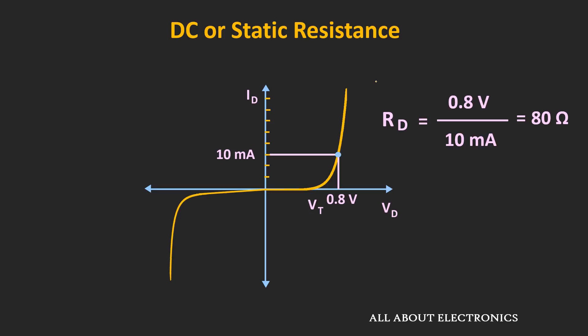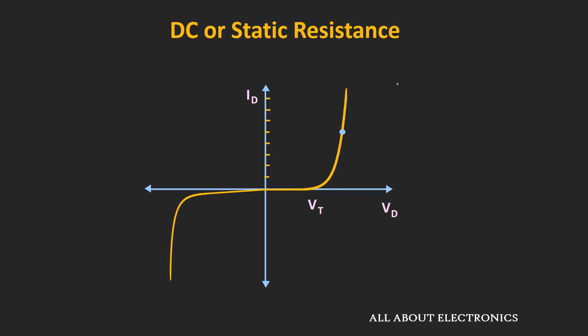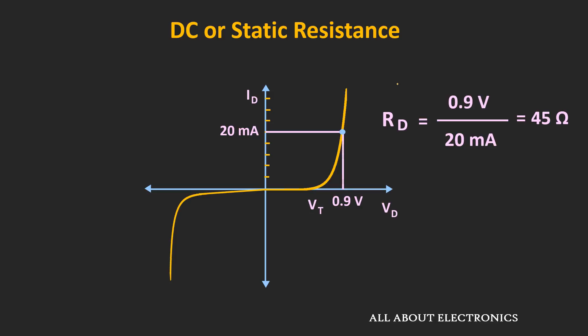Whenever the operating voltage and current change, the value of this DC or static resistance will also change. For example, if the operating current and voltage are 20 mA and 0.9V respectively, the DC or static resistance equals 0.9V divided by 20 mA, which is 45 Ohm. As the operating condition changes, the DC resistance changes. As we move towards the right-hand side of the curve, the resistance offered by the diode reduces.